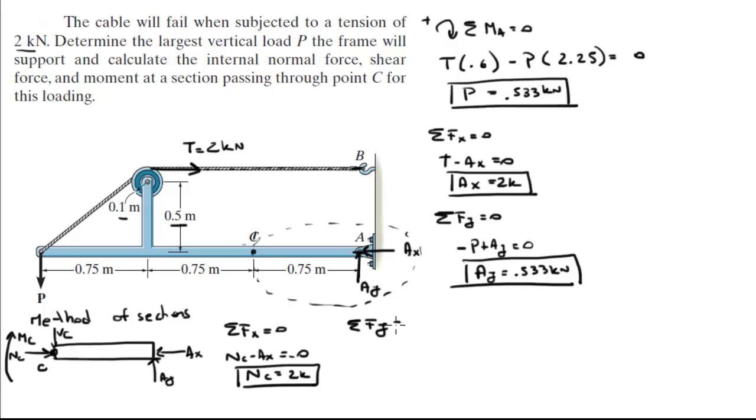Sum of the forces on Y is equal to 0. The shear coming down, AY coming up is equal to 0, so the shear is equal to AY at 0.533 kN. This is kilonewtons in case you are wondering.